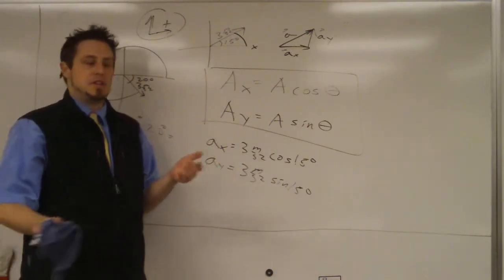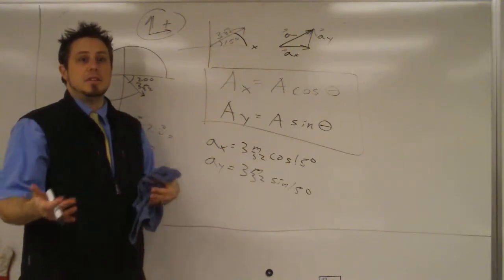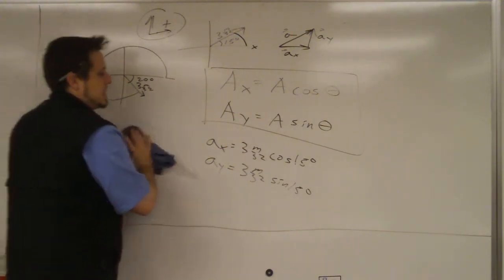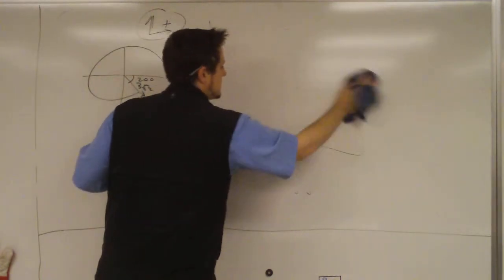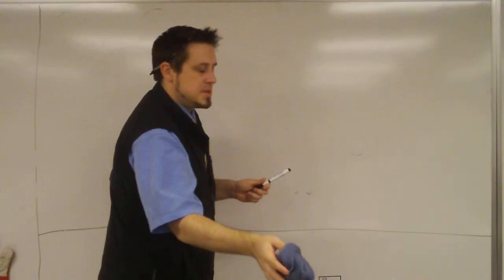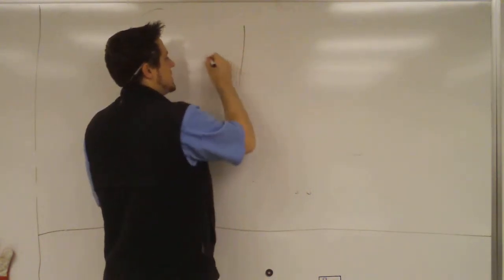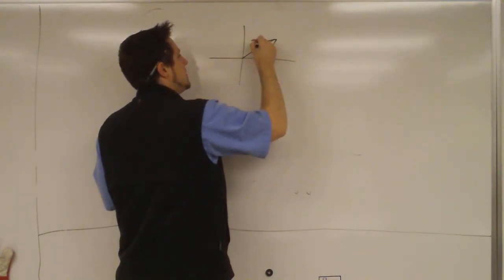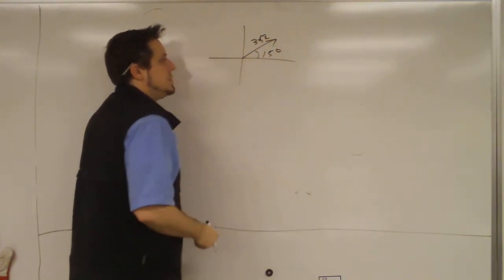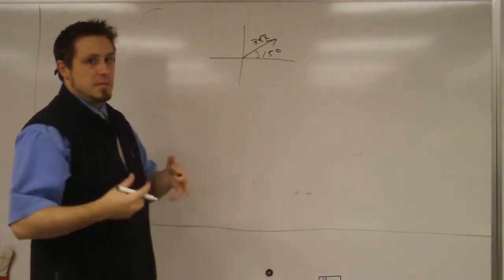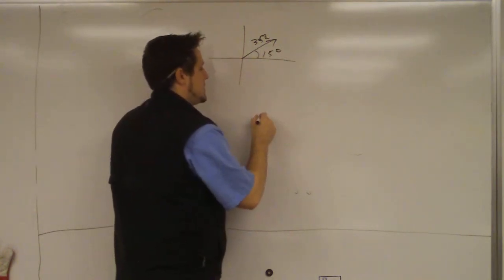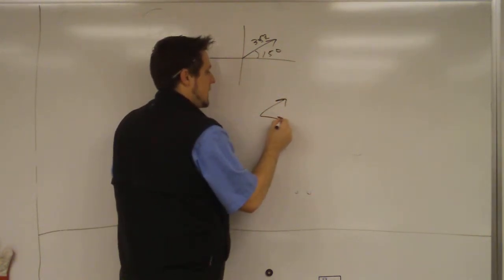The next method is the trig method, using SOHCAHTOA. I'm going to do the same problem — 3 meters per second squared at 15 degrees — just to illustrate that you get the same result. With the trig method, you're going to draw in the x and y components.